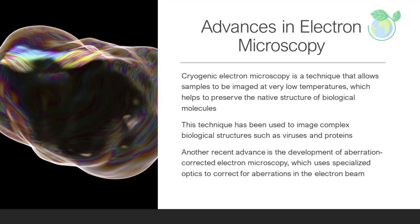Recent advances in electron microscopy have expanded its capabilities and improved its resolution. Cryogenic electron microscopy (cryo-EM) is a technique that allows samples to be imaged at very low temperatures, which helps to preserve the native structure of biological molecules. This technique has been used to image complex biological structures such as viruses and proteins. Another recent advance is the development of aberration-corrected electron microscopy, which uses specialized optics to correct for aberrations in the electron beam, allowing for higher resolution imaging and improved image quality.